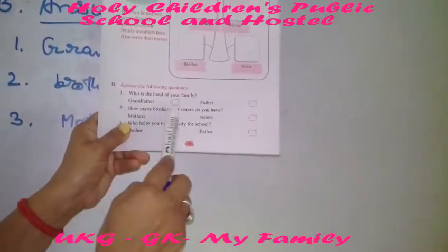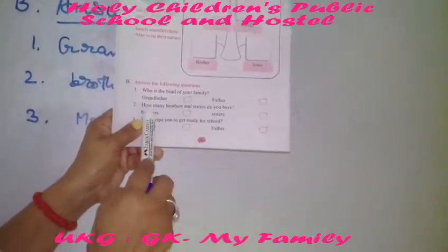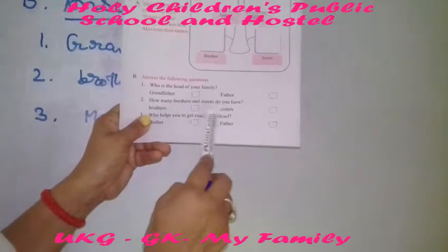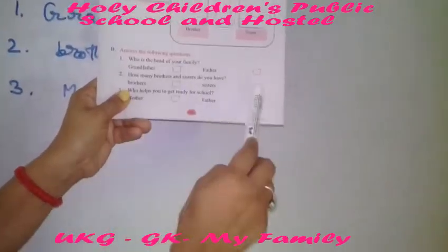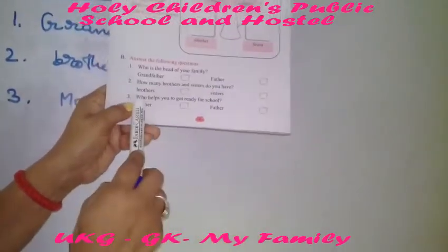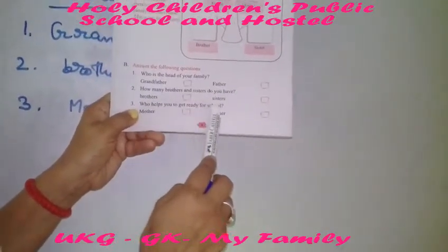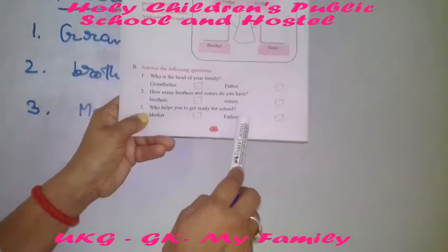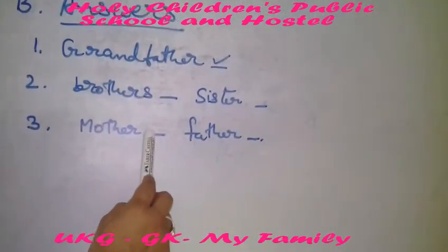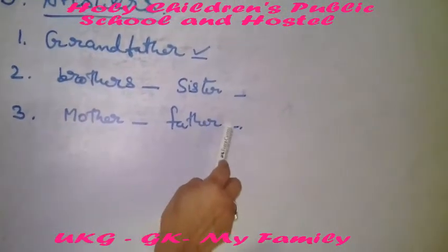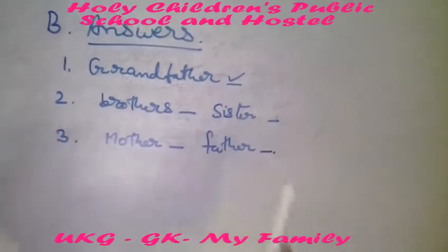Number 2. How many brothers and sisters do you have? You have to write the number of your brother and sister. Number 3. Who helps you to get ready for school? If your mother helps you, put a tick on mother. Or if father, then put a tick on father.